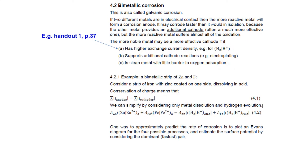Turning to section 4.2, bimetallic corrosion — also known as galvanic corrosion. When two different metals are connected together, very commonly the more reactive metal corrodes much faster than it would have in isolation. The key explanation is that the less reactive metal simply provides an additional amount of cathode reaction, while the more reactive metal suffers almost all of the anodic oxidation. Bimetallic corrosion is a particular problem for the more reactive metal if the second, more noble metal has a high exchange current density.